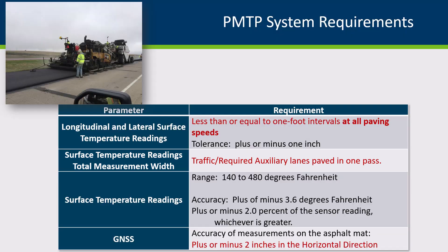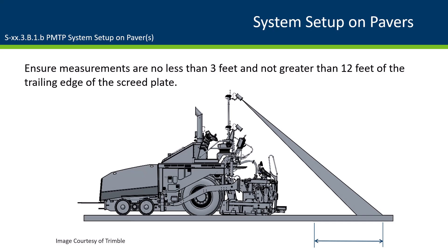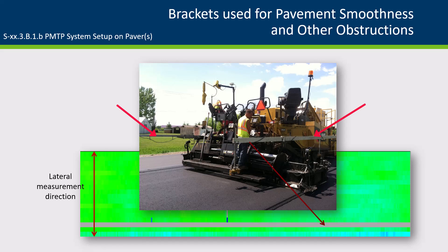Additionally, ensure that the measurements are collected at a horizontal accuracy of two inches or less. Ensure the installed PMTP system takes measurements at a distance of no less than three feet and no greater than twelve feet from the trailing edge of the screed plate, unless waived by the engineer.